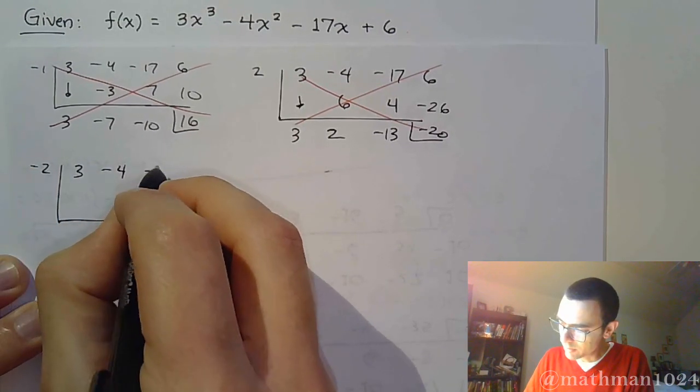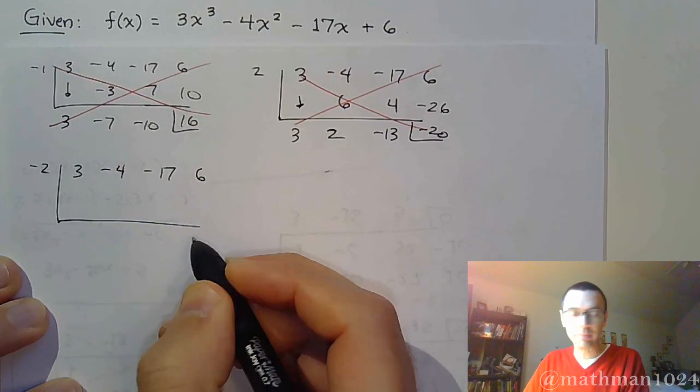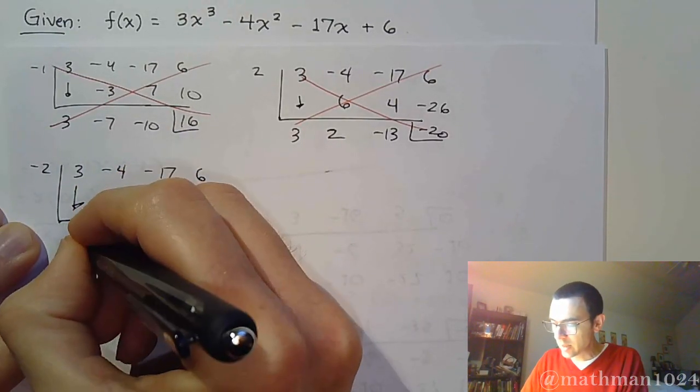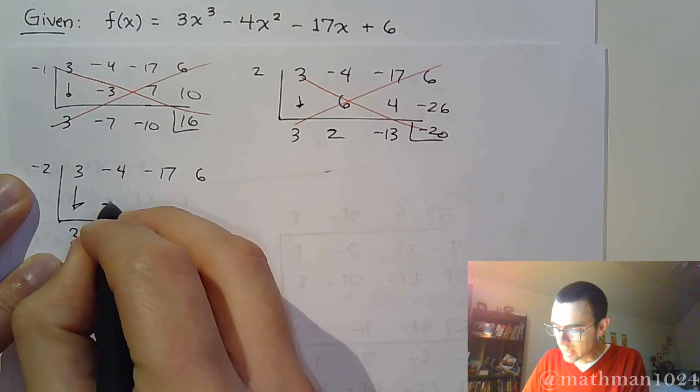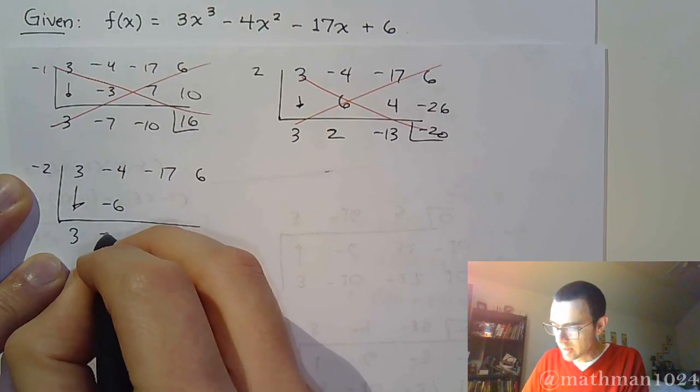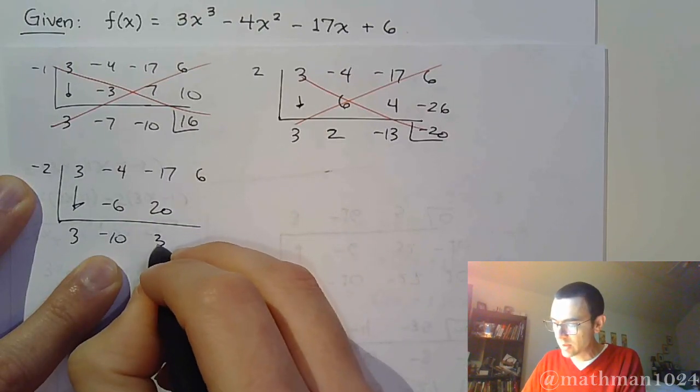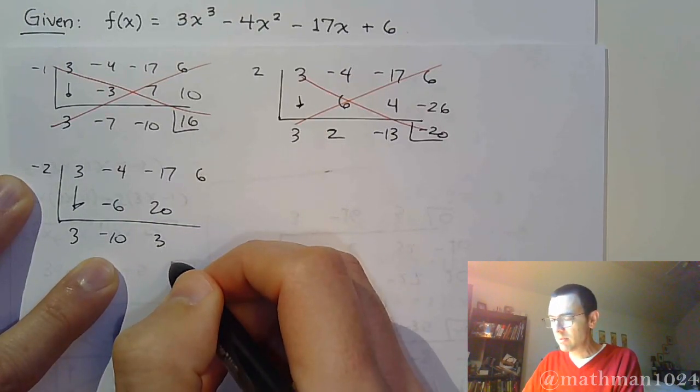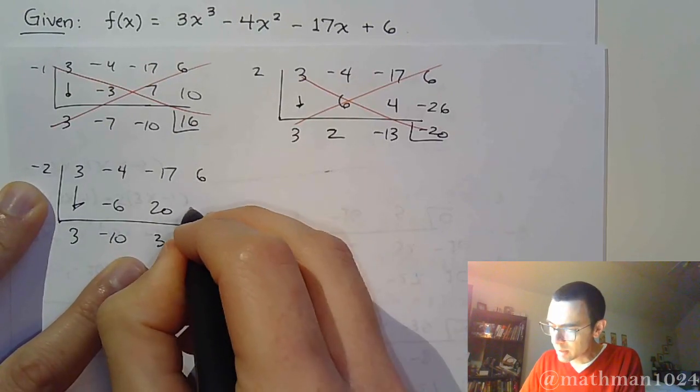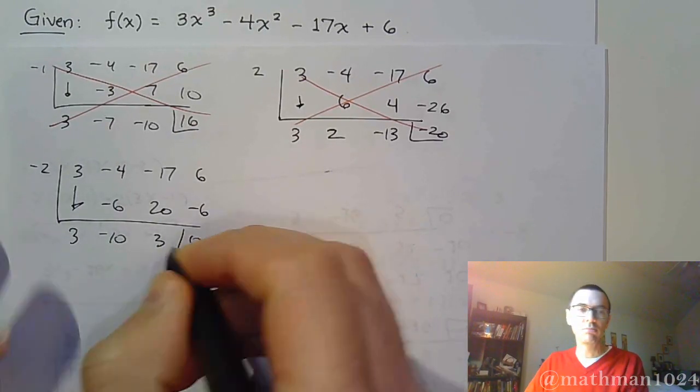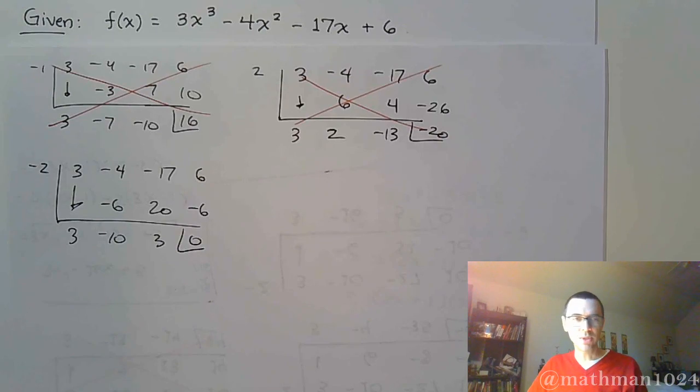So, 3, negative 4, negative 17, and 6. All right. That's 3. I multiply to get negative 6. That's negative 10, which becomes positive 20. That's 3. Wait, did I do that right? Yeah. 3, so that becomes negative 6. So, there you go. We found a number that works. It was negative 2.